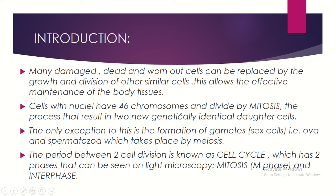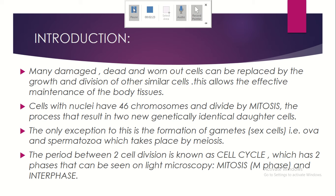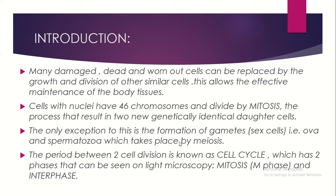Why daughter cells? This is a parent cell — from the parent cell, daughter cells are formed. The only exception to this is the formation of gametes, that is the sex cells — the ova and spermatozoa — which takes place by meiosis. So in all other cells, mitosis occurs; only in sex cells does meiosis occur.